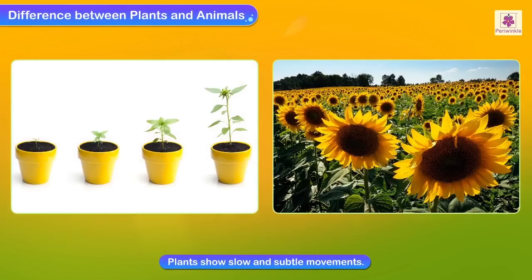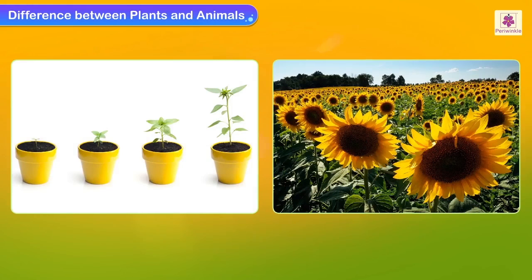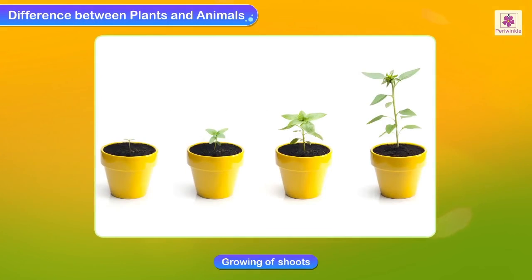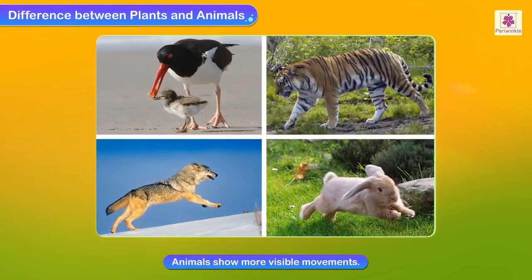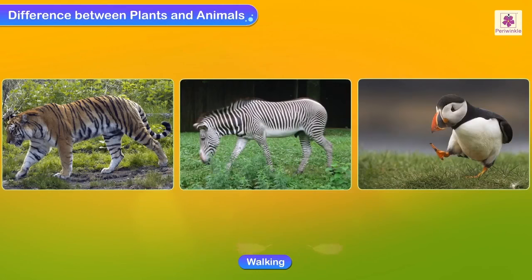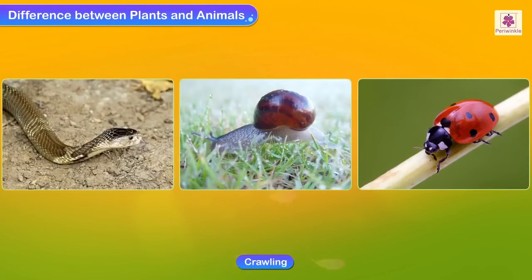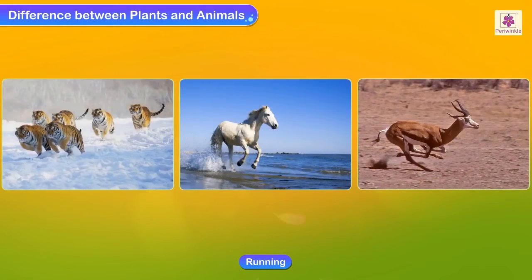Plants show slow and subtle movements. Such movements include the growing of shoots and flowers turning in the direction of the sun. Animals show more visible movements like walking, crawling, hopping, and running in search of food, security, and shelter.